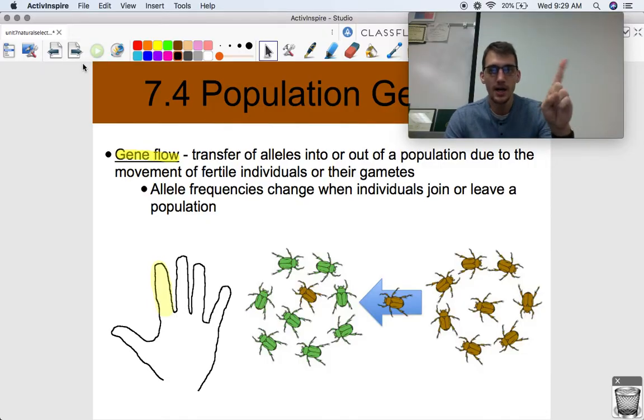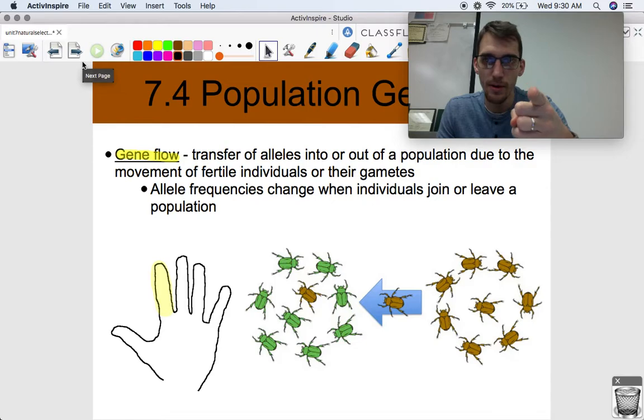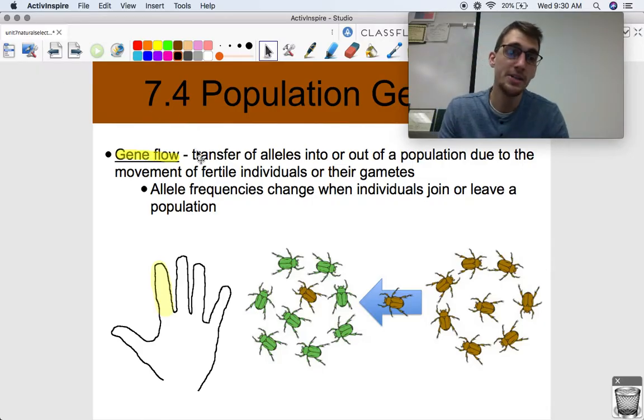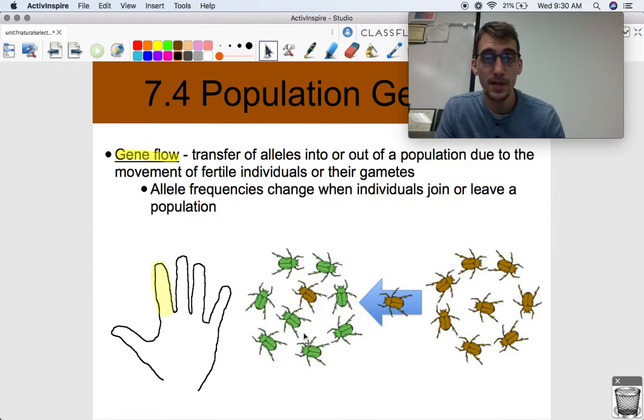The last one we're going to talk about is gene flow, and we use the pointer finger to represent that, because we can indicate direction, something leading or something going. Gene flow is the transfer of alleles in or out of a population due to the movement of fertile individuals or their gametes. We got the population of brown beetles over here, and they have their own gene pool, their own allele frequencies. But if this guy over here says, hey, I want to join this population for whatever reason, this gene pool has definitely changed. Allele frequencies have definitely changed within this population. That is gene flow, and thus evolution has occurred. Microevolution - allele frequencies change in a population due to gene flow.